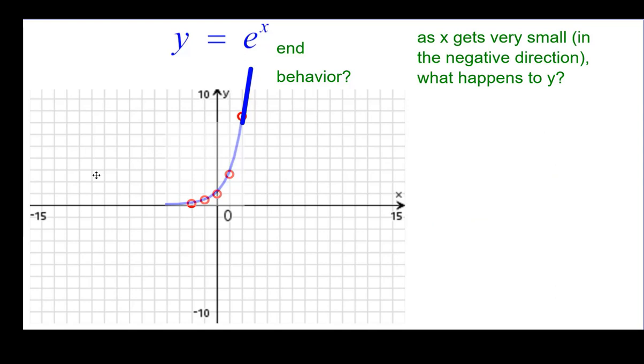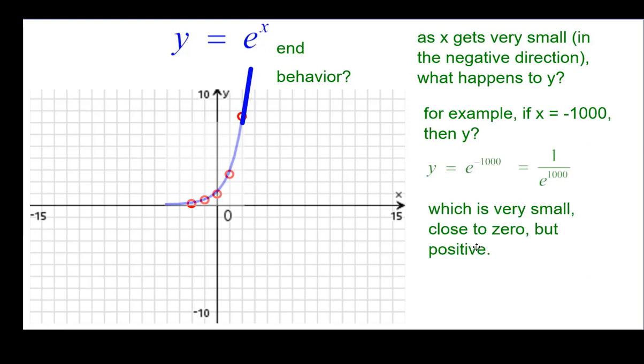As x is very small, but in the negative direction, this direction, what happens to y? This example, if x is a negative 1,000, y would be e to the negative 1,000th. By definition, it would be 1 over e to the positive 1,000th. So it would be 1 over this very, very large positive number, which is very, very close to 0, but still positive. And we would indicate that graph out here, flattening out here. It never gets to 0.